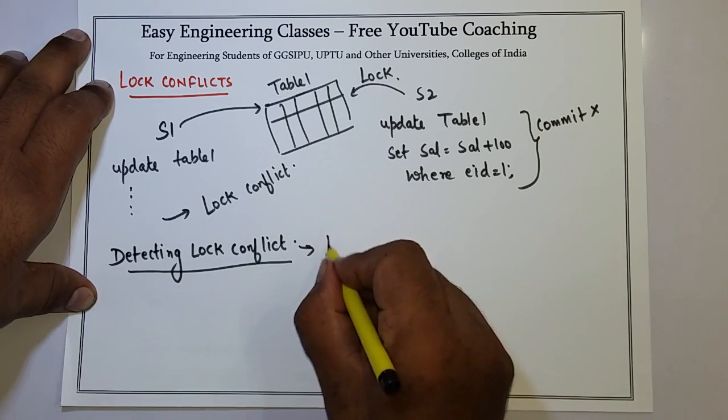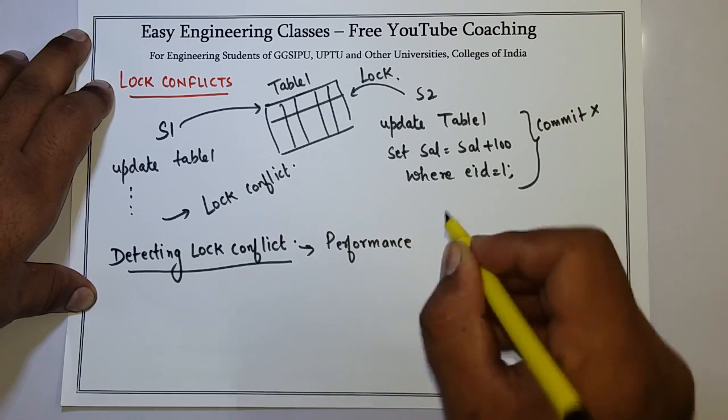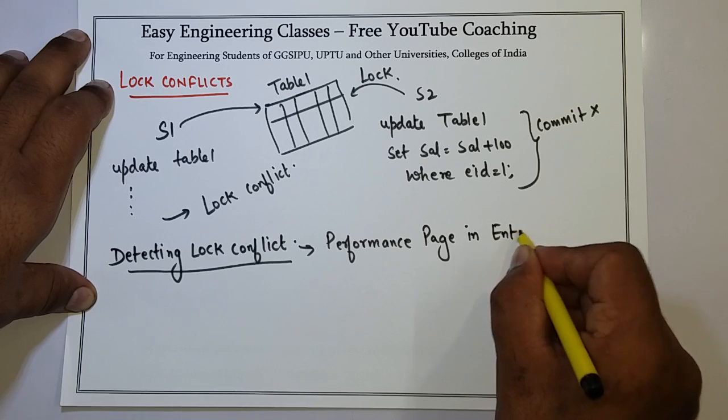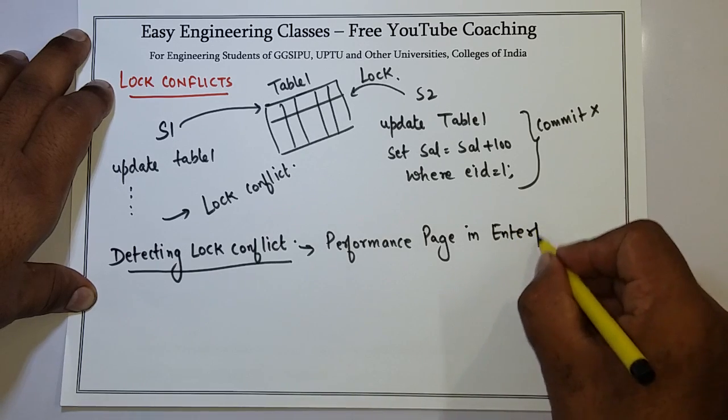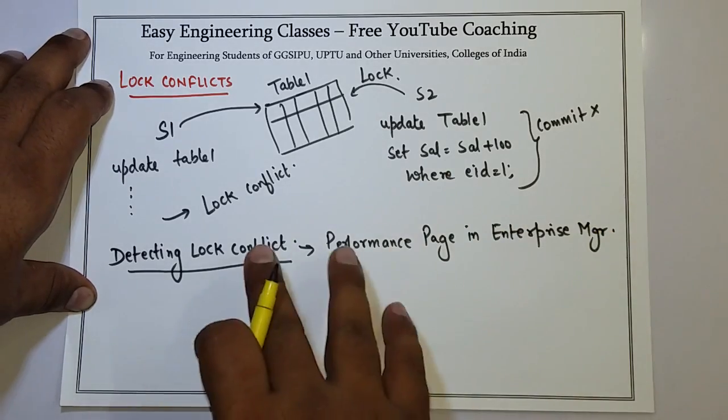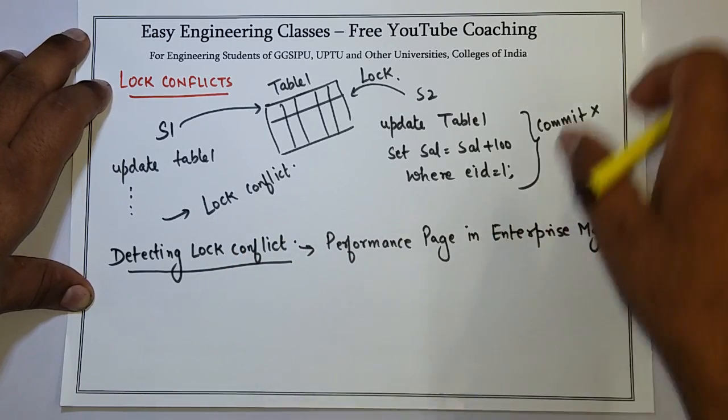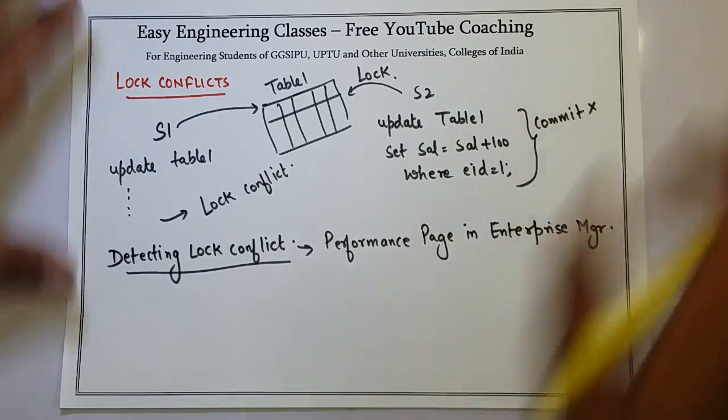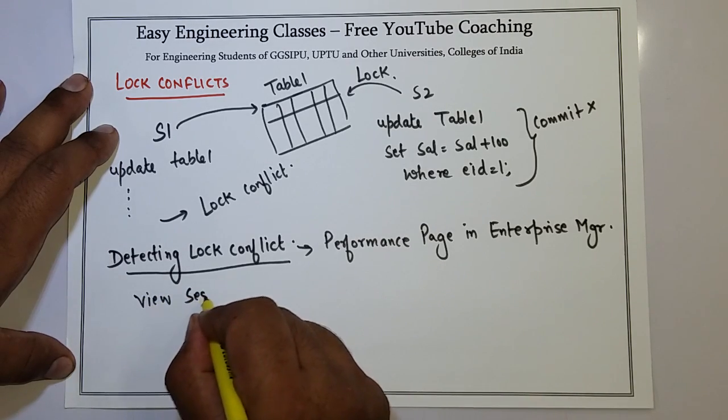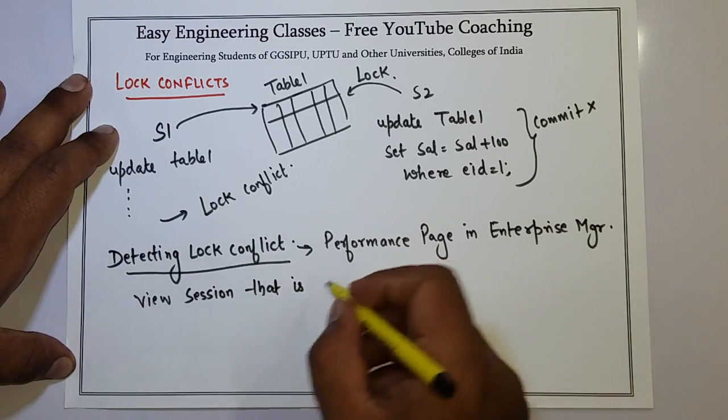As a DBA you can use performance page in enterprise manager to detect lock conflict. This is one of the utilities of the Oracle database that you can, as a DBA, access performance page which is present in enterprise manager to detect lock conflicts. Under that you need to view sessions. You need to view a session that is actually blocking other sessions from obtaining lock.